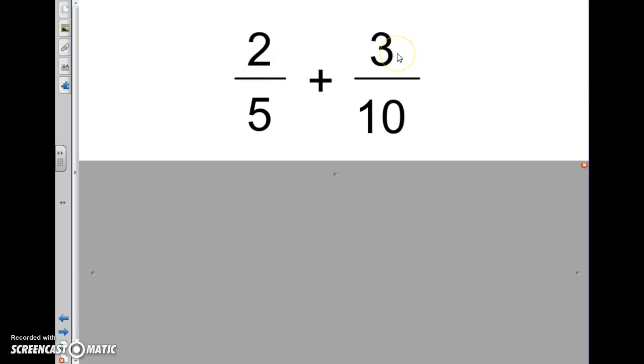We did this yesterday, we're going to look at it one more time here. If I have 2/5 plus 3/10, those are unlike fractions, meaning that their denominators are not the same—they're different sized pieces. So we need to find a denominator that is the same, so that means we need to find a common multiple.